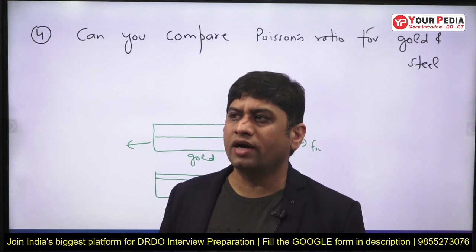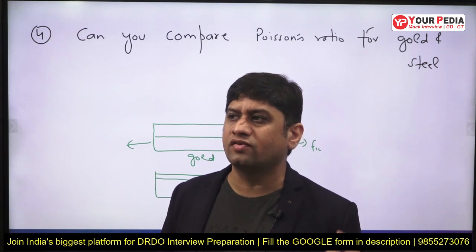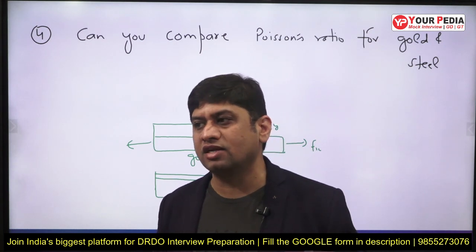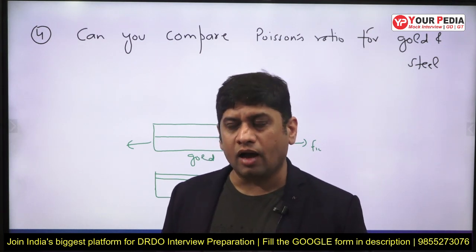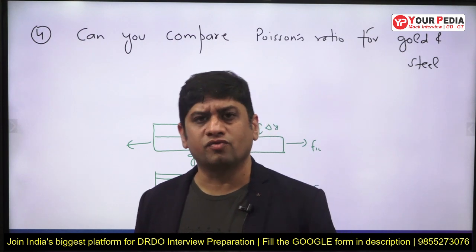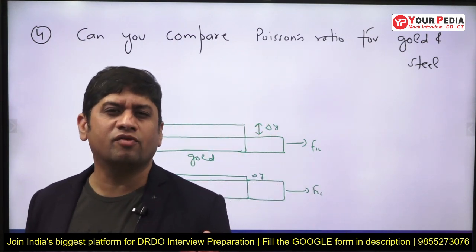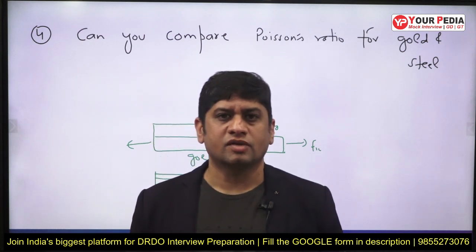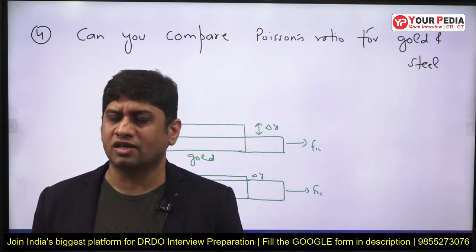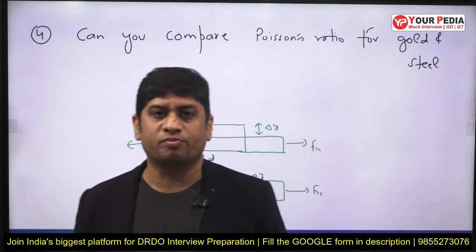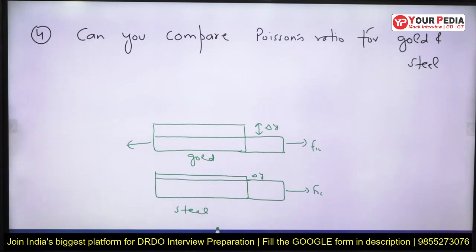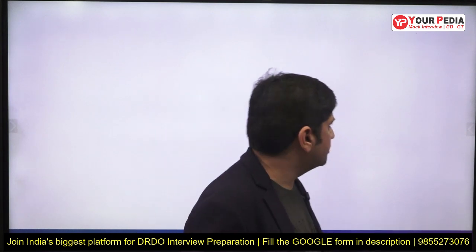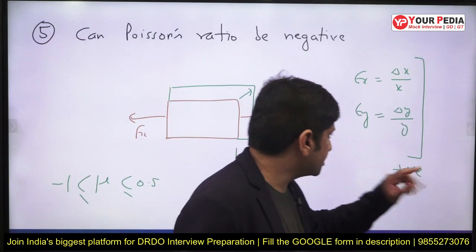They will try to gauge your thinking — are you thinking in the right direction? You have already studied that gold and silver are malleable, meaning they can be stretched, and if they can be stretched the lateral strain is significant. You have never specifically studied the Poisson's ratio of gold, nor is it required, but some interpretation must be made on the spot. They want to check your presence of mind — whether you can link things and provide the right approach.